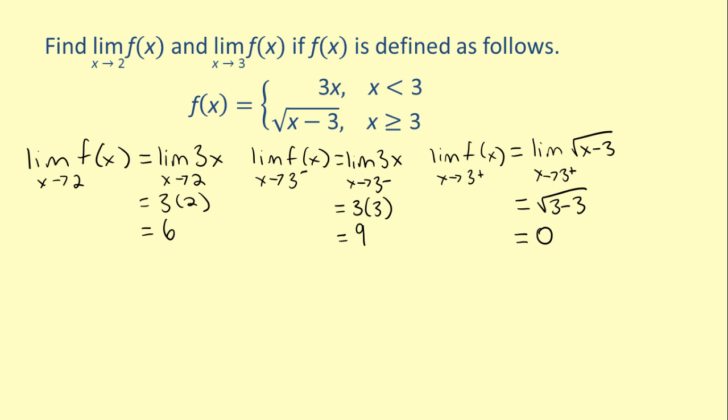Notice that the limit as x approaches 3 from the left is not equal to the limit as x approaches 3 from the right. Therefore, since the two limits are not equal, the limit of f(x) as x approaches 3 does not exist.